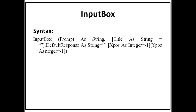Next is InputBox. The syntax of InputBox also has some parameters to pass. The first parameter is the prompt, which indicates what message to give the user for reading values. The second parameter is the title for the input box. The third parameter is the default response, where a default value can be set. If the user does not input any value, the default value will be assigned. After that, X position and Y position are used for displaying the input box. So there are a total of five parameters used in InputBox.